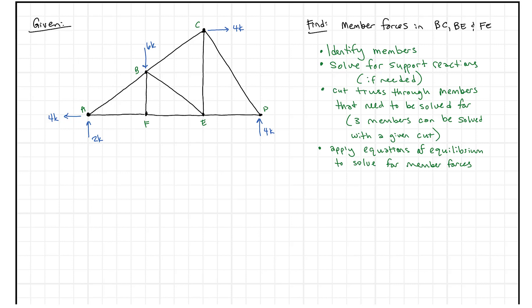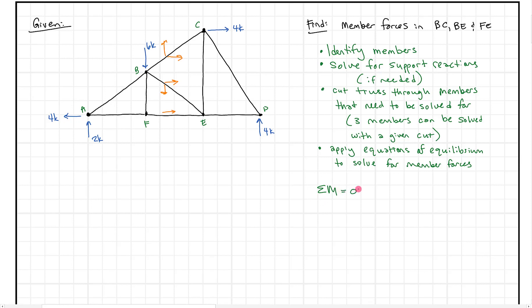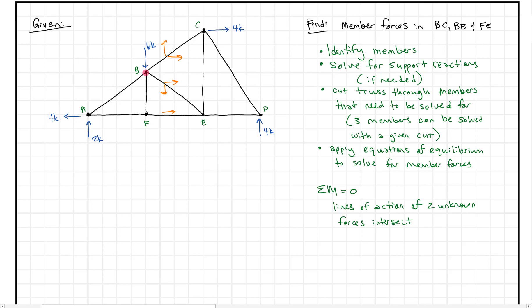You might remember in the last video where we have a horizontal top chord and a horizontal bottom chord — right away we could solve for one component using sum of forces in the y direction. In this case, we have y-direction components in multiple members, so we can't solve directly for any one member that way. That leads us to use sum of moments, which is super powerful with the method of sections. What we specifically look for is where the lines of action of two unknown forces intersect — for example, at point B, forces BC and BE intersect, making it a great spot to sum moments.